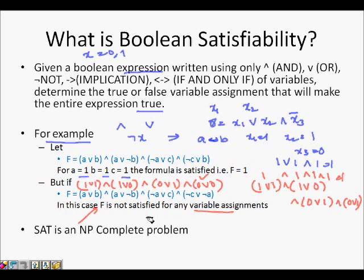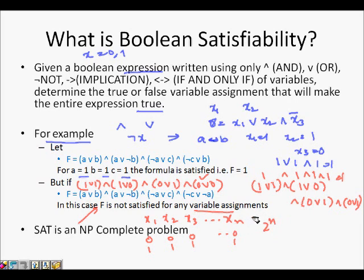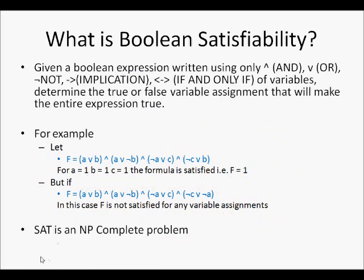Boolean satisfiability asks: can we find a solution? If we have n variables x1, x2, ..., xn, each with values 0 or 1, there are 2^n possibilities. This means an exponential algorithm is needed to find if there is any assignment that will satisfy the formula. We now have to prove that this problem is NP-complete.